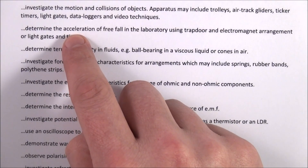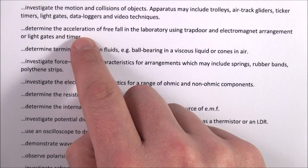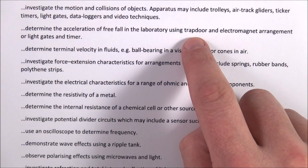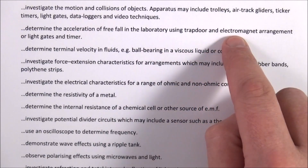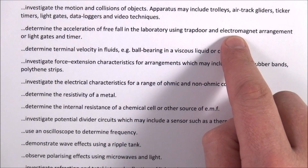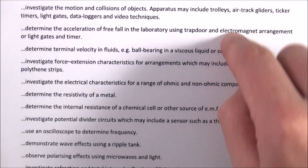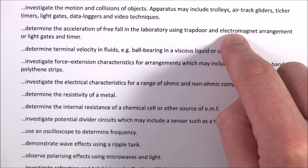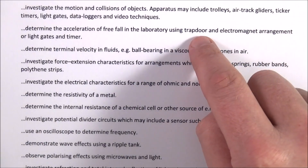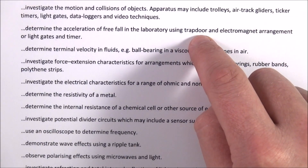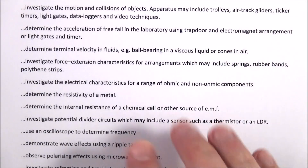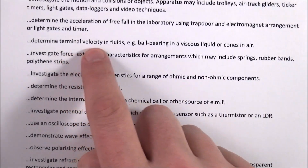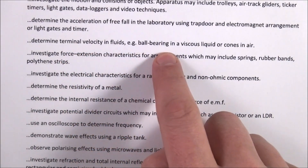In order to determine the acceleration of free fall in the lab, you can basically use a trapdoor and electromagnet arrangement, which means that when you switch off the electromagnet a steel ball falls and it opens a trapdoor which stops the timer.